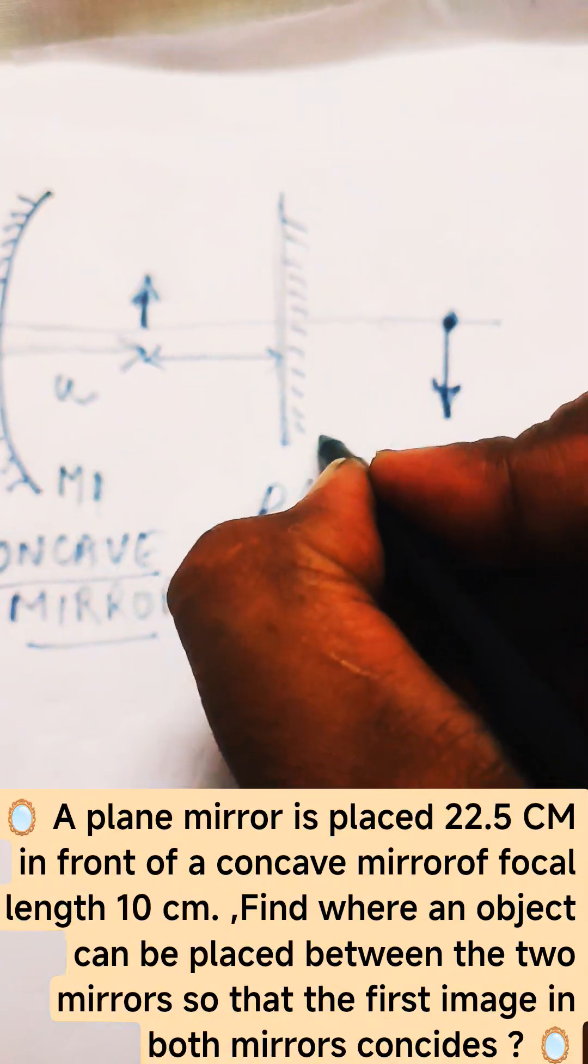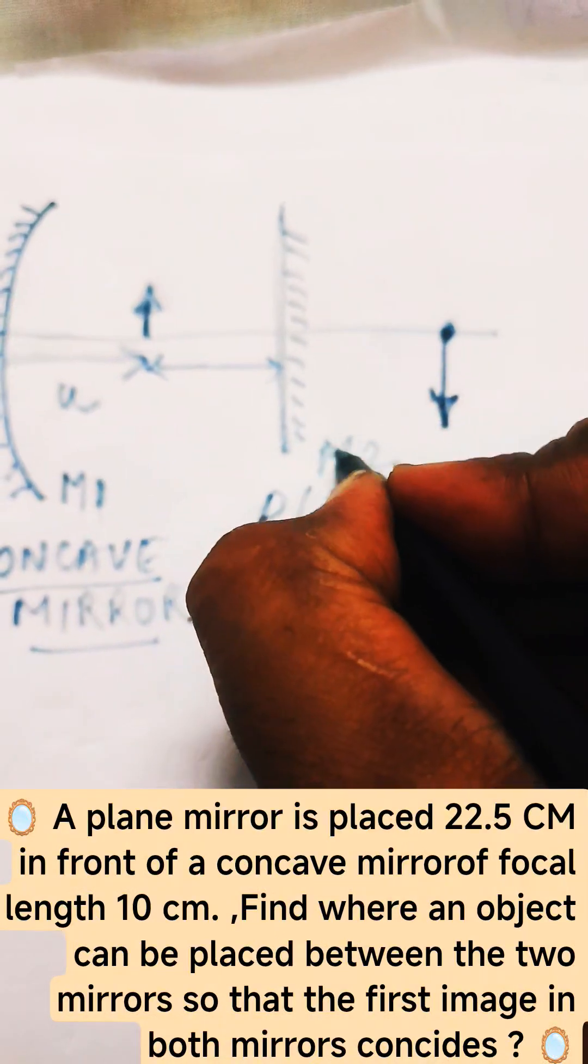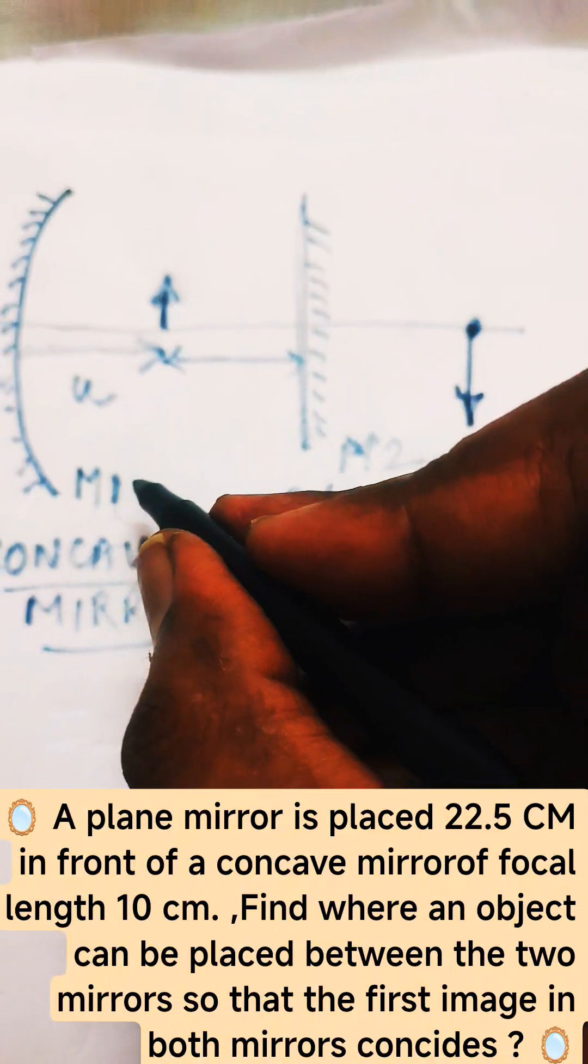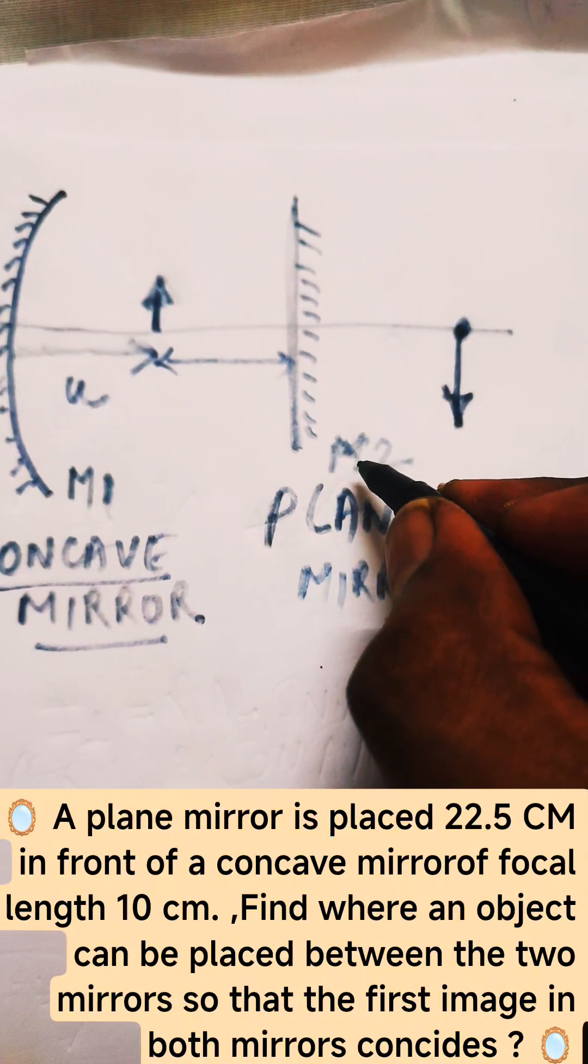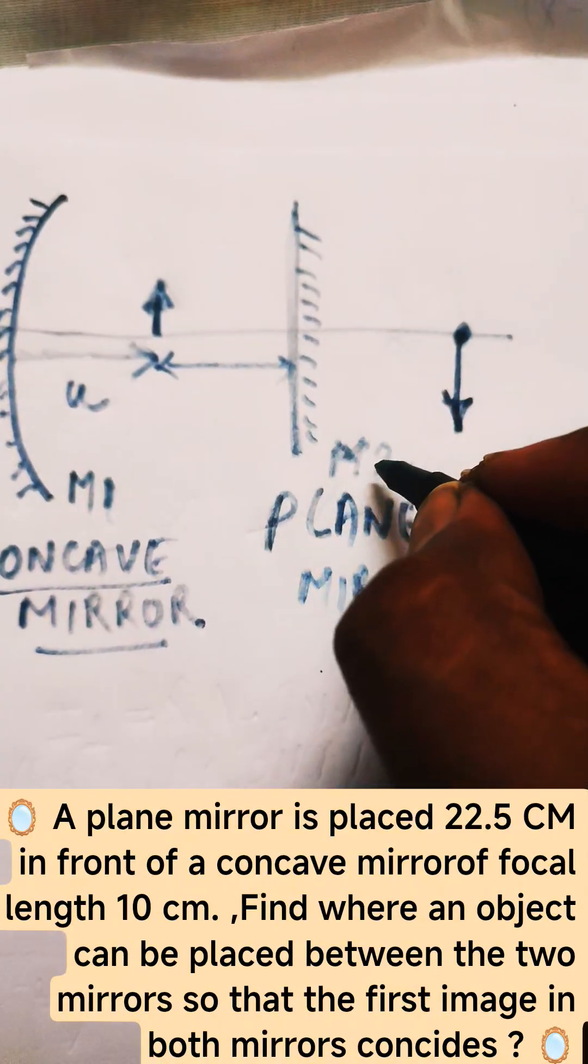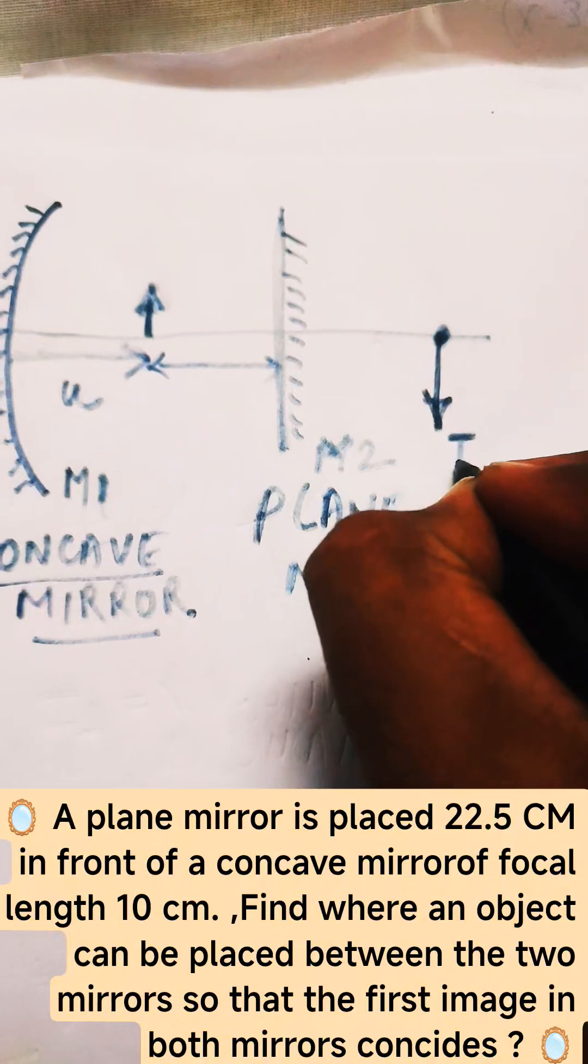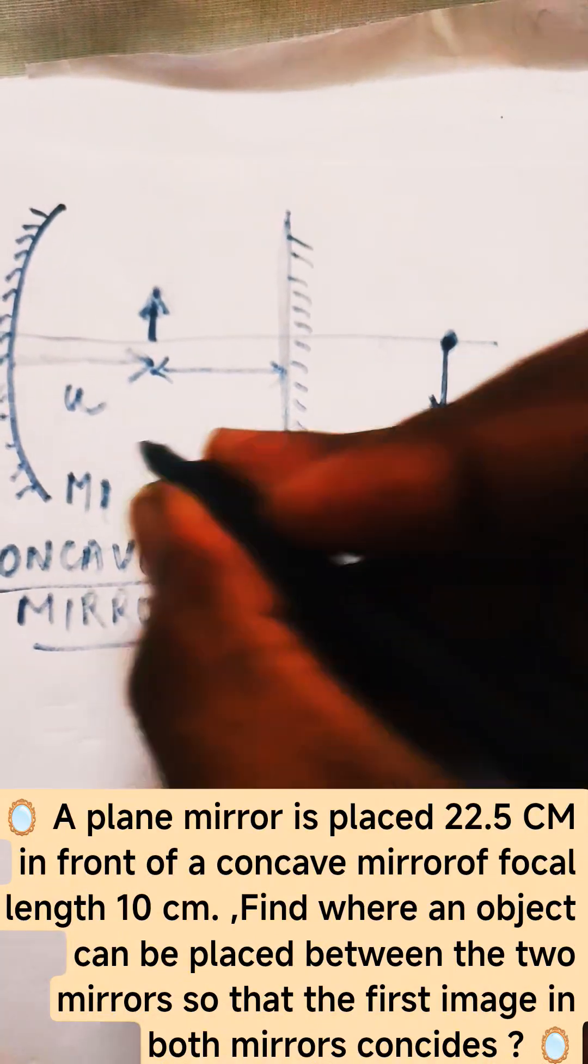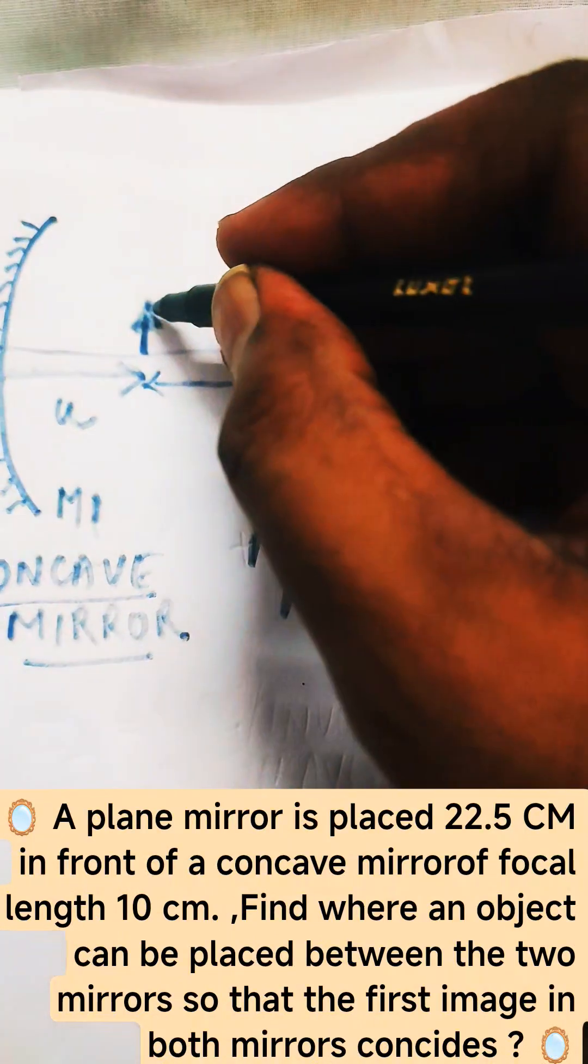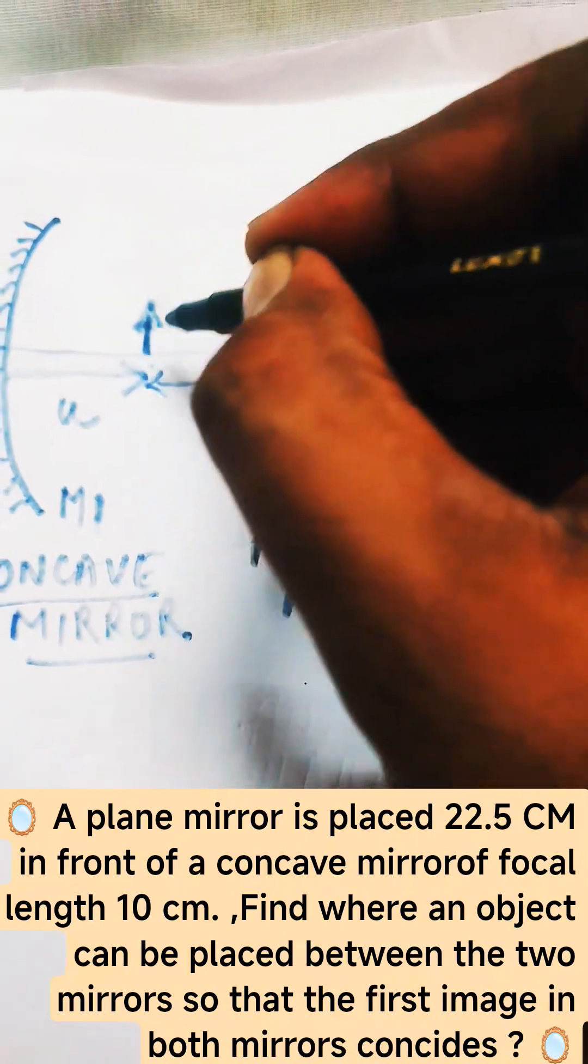So if this is M1, this is M2 - the two mirrors, one is concave, one is plane - and they are forming the images: I1 by the concave mirror, and this is the object.